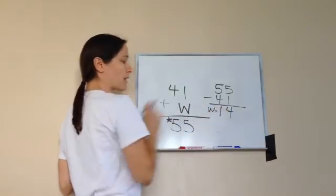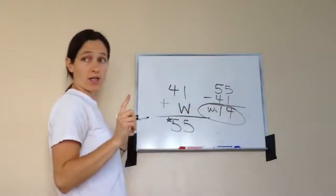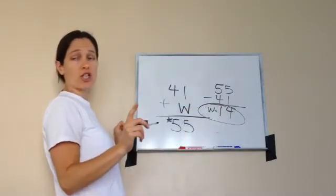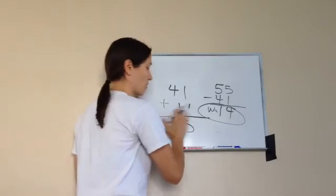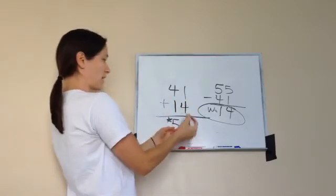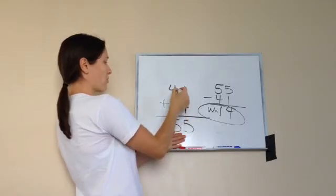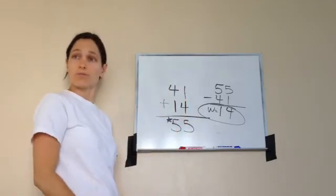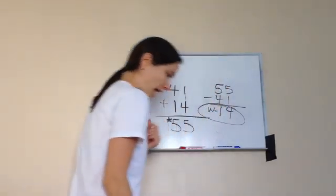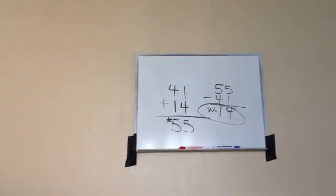We're saying that W equals 14. Always check — don't ever say W equals 14 and not check it. Does W equal 14? Let's try: 4 plus 1 is 5, 4 plus 1 is 5 — we got it right. W equals 14, and that is lesson 10. Thank you.